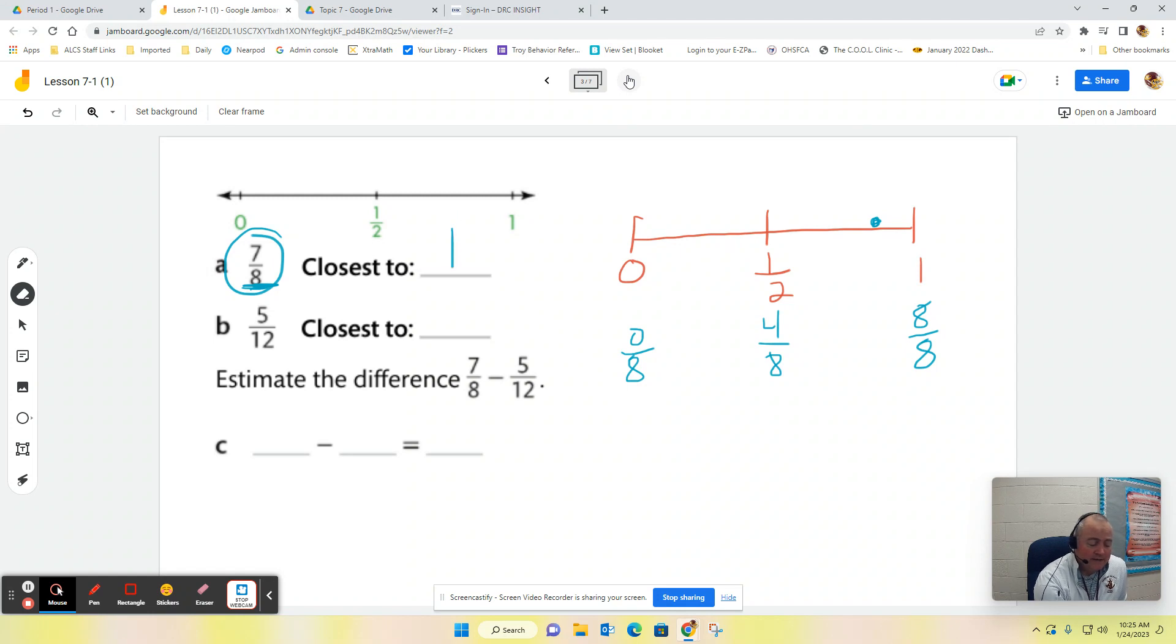When we look at 5/12, so now I know zero will be 0/12. One whole would be 12/12. And one-half would be, well, half of twelve is six, so one-half would be 6/12.